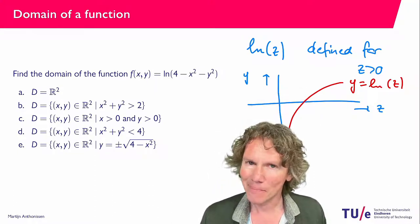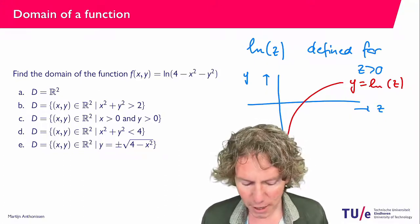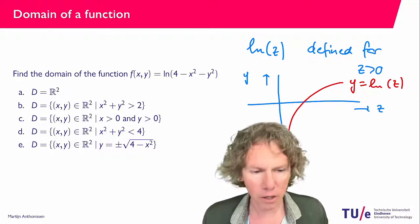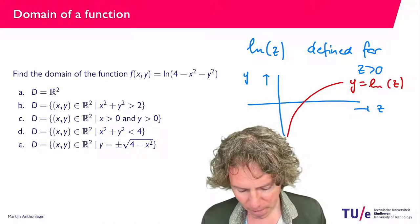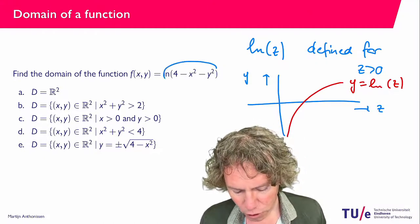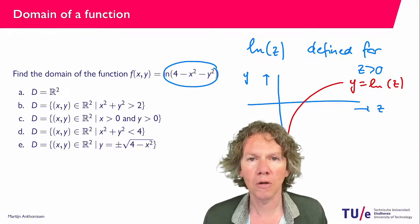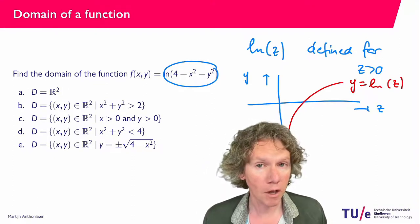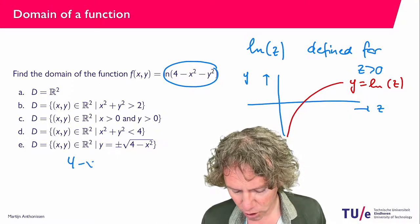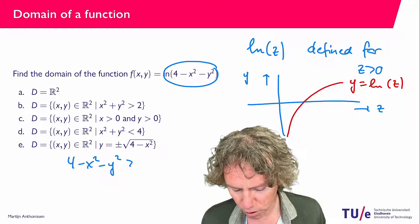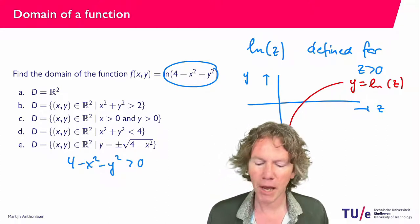So we have most of what we need now. So what you now can say with this knowledge is that the function is defined when the argument, so this 4 minus x squared minus y squared is positive. So the condition we have is that 4 minus x squared minus y squared should be larger than 0